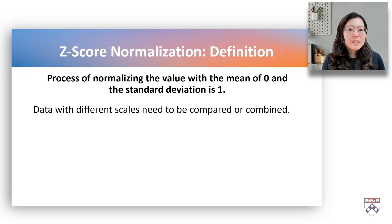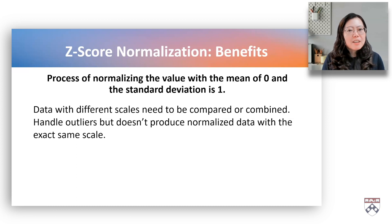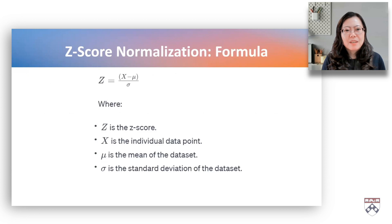These scores represent the number of standard deviations a data point is from the mean of the dataset. The result of this transformation is a new variable with a mean of 0 and a standard deviation of 1. This process is particularly useful in situations where different scales need to be compared or combined. Z-score normalization is commonly applied in various statistical analysis, machine learning, and data preprocessing tasks. Z-score normalization handles outliers, but doesn't produce normalized data with the exact same scale. The formula of the z-score normalization is the value minus the mean, dividing it by the standard deviation.